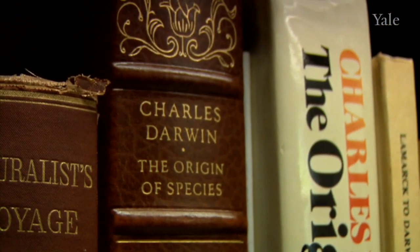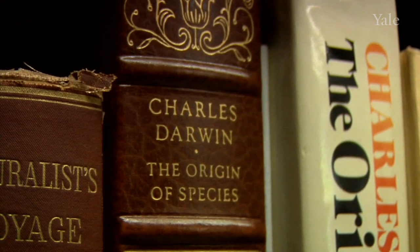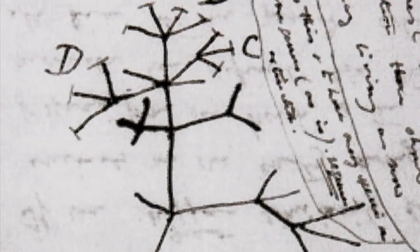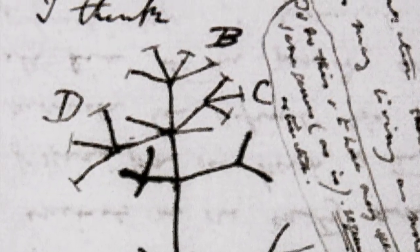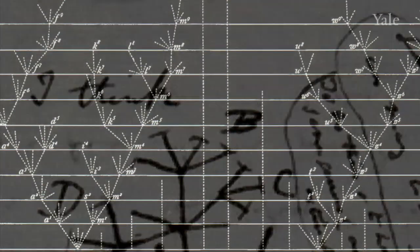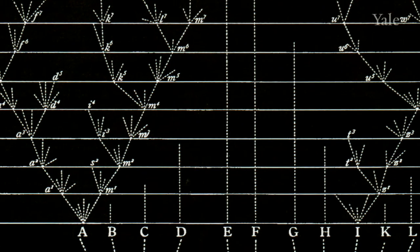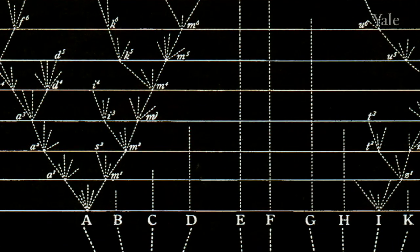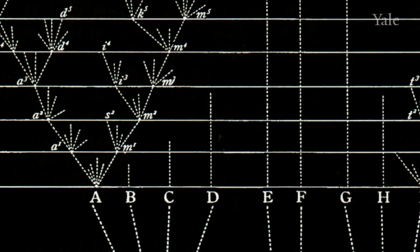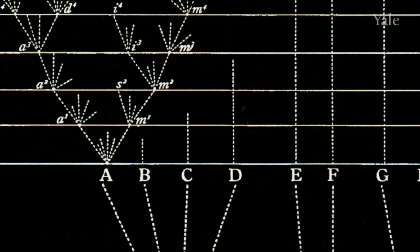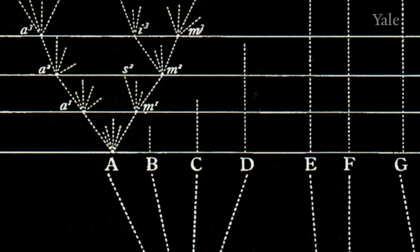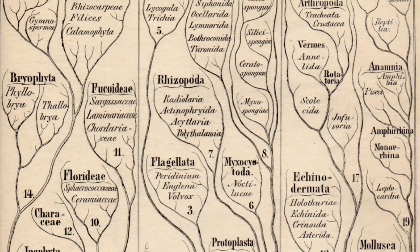In his book The Origin of Species, published in 1859, biologist Charles Darwin compared life on the planet to a great tree. Darwin realized that the process of evolution implied shared ancestry, going all the way back to the beginning of life.